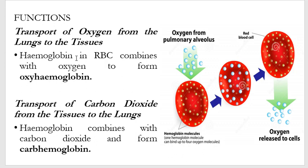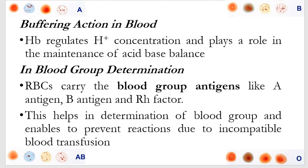In terms of oxygen, the hemoglobin in red blood cells is able to combine with oxygen to form oxyhemoglobin, and this is how transport occurs. While this same hemoglobin can combine with carbon dioxide to form carboxyhemoglobin and hence facilitate the process of transportation. In the function of buffering in blood, we see that hemoglobin has an ability to regulate protons and their concentration, playing a role in the maintenance of acid-base balance.